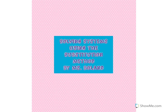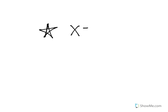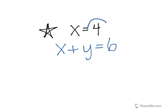When you solve systems using substitution, substitution is basically you substituting a variable like x — say x equals 4 — into an equation. So if I have two equations, x equals 4 and x plus y equals 6, I'm going to substitute what x is, which equals 4, into the other equation.